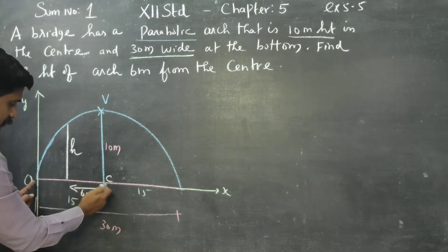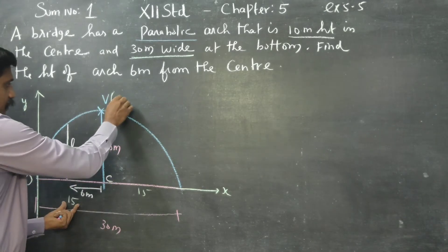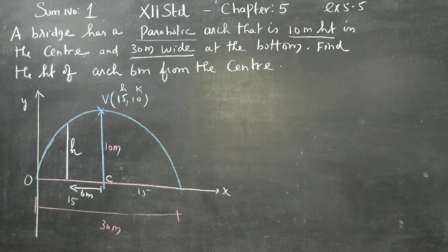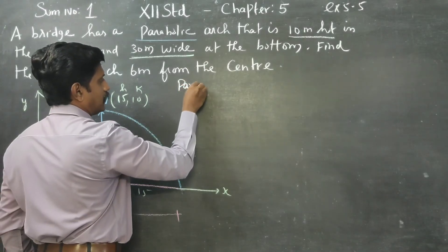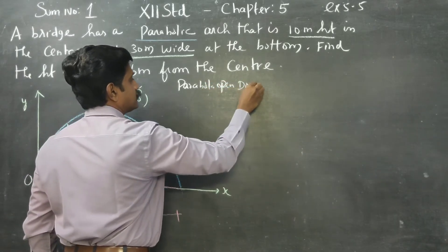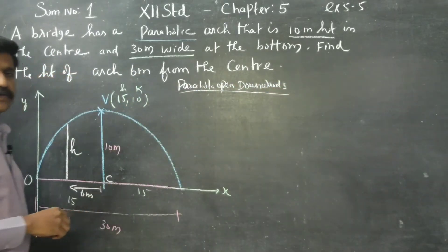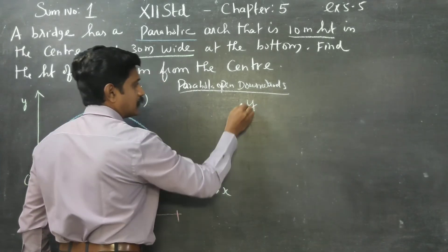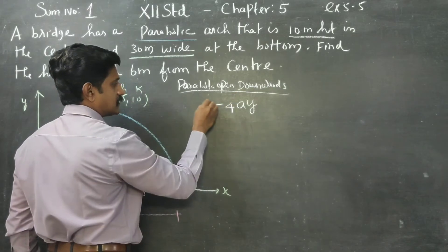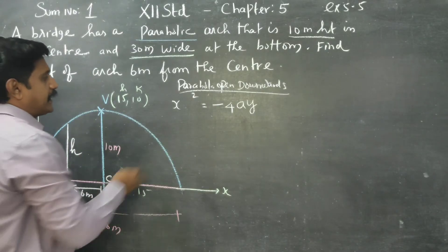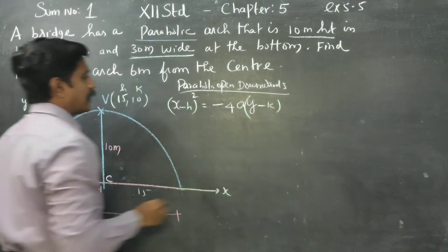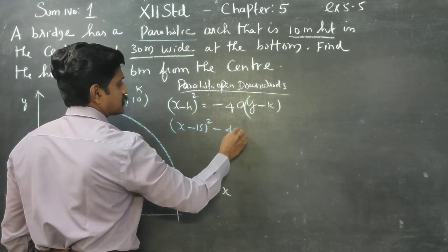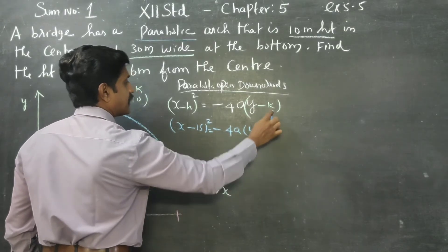The total width is 30 meters, so the vertex and line of symmetry is at 15. The x-coordinate is 15, y-coordinate is 10, so H=15 and K=10. The parabola opens downwards. The central line is the y-axis. The standard form equation for a downward parabola is: x minus H squared equals minus 4A times y minus K.